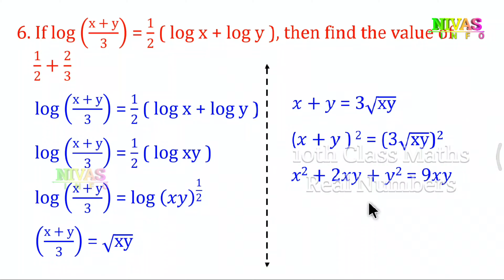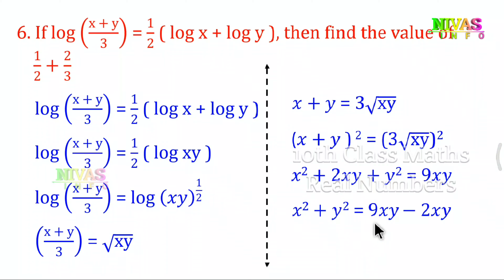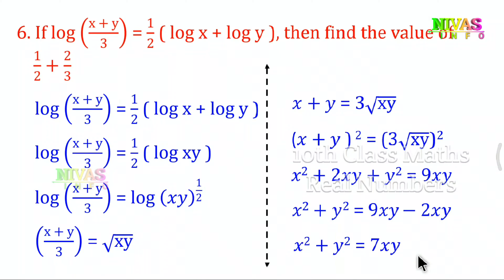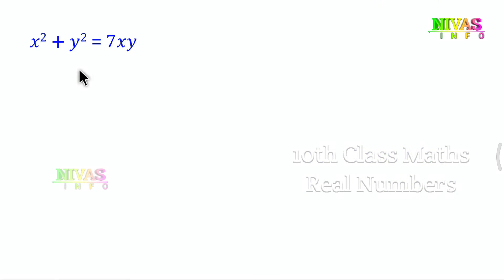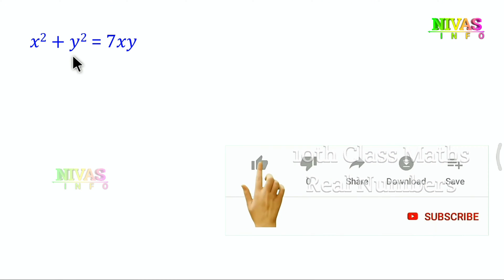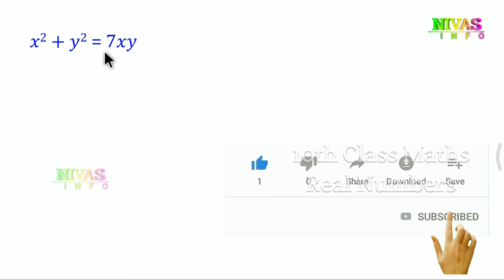So we have 9xy on the right side. On the left side, x squared plus y squared. Rearranging: x squared plus y squared equals 9xy minus 2xy, which gives us 7xy. We observe this equation — the only constant is 7.